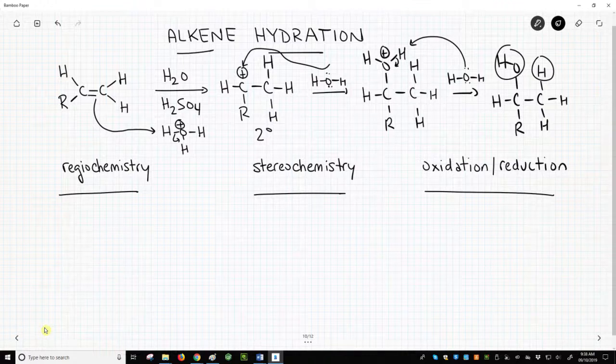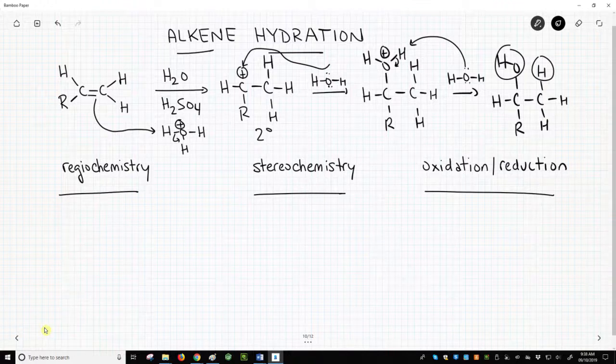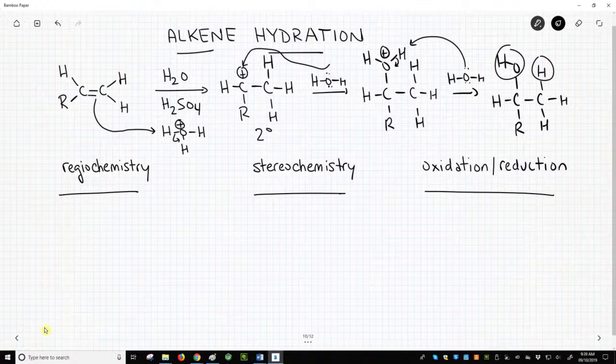How about regiochemistry? This hydration looks almost identical to the hydrohalogenation. We protonate an alkene to make a carbocation. Be sure to form as stable a carbocation as possible. The final product that goes through the more stable carbocation is again called the Markovnikov product.